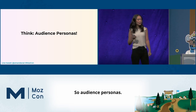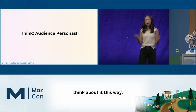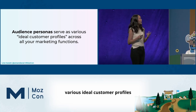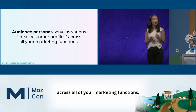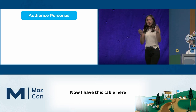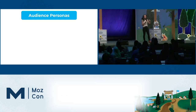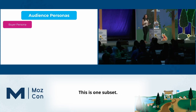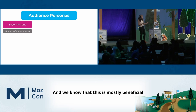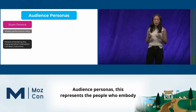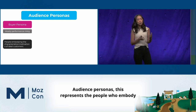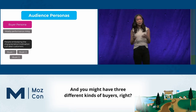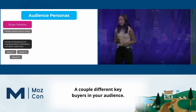So, audience personas. To describe your entire audience: audience personas serve as various ideal customer profiles across all of your marketing functions. Within this group of audience personas, you have your buyer persona — this is one subset, mostly beneficial for the performance marketing team — representing people who embody the characteristics and motivations of ideal customers. You might have three different kinds of buyers, a couple of different key buyers in your audience.